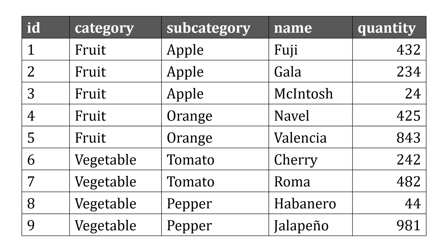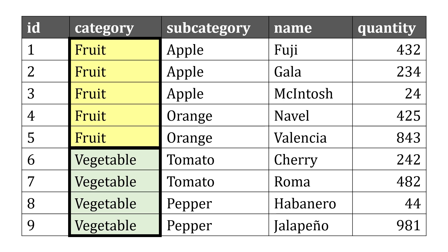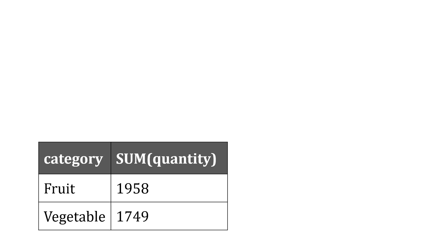As an example, let's imagine we work at a grocery store and we track the quantity of items that we have, and what we want to do is sum up the quantity by category. We have categories of fruit and categories of vegetables, and ultimately what we want to see in the results is those two categories and the sum of quantity for each of those categories.